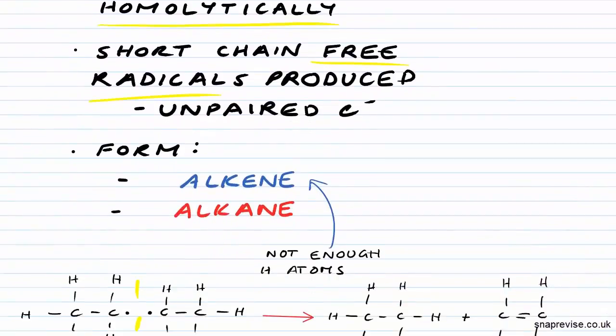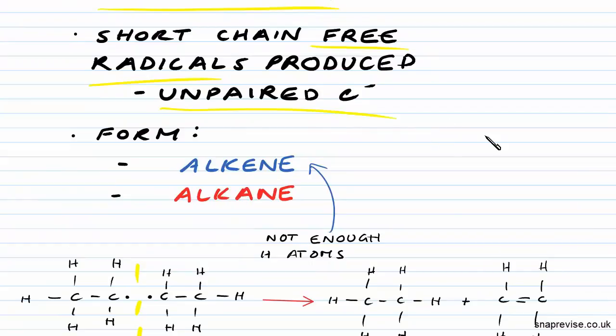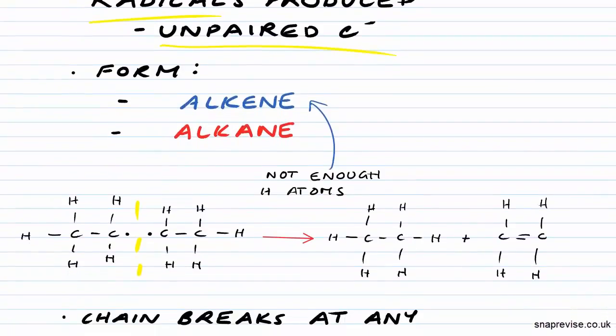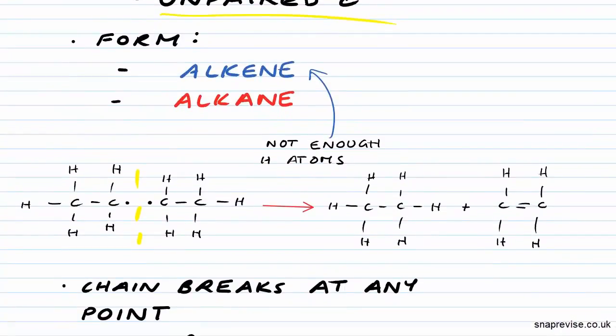Now each of these free radicals will have an unpaired electron because each gets one electron. And it's this unpaired electron that makes them these really reactive free radicals. As you can see here, I've shown our free radicals produced.